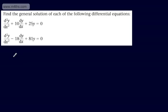Let's look at another example. Taking the auxiliary equation: m² - 18m + 81 = 0.